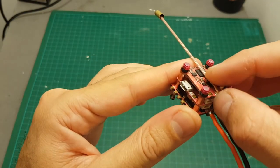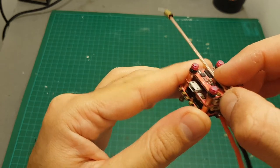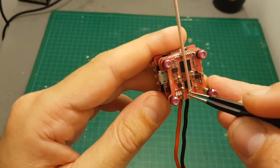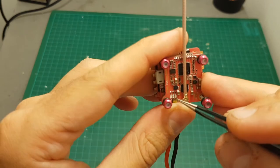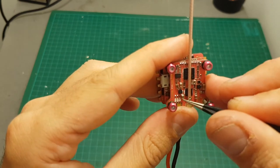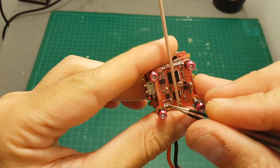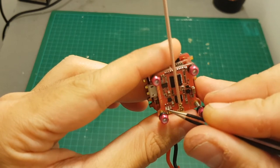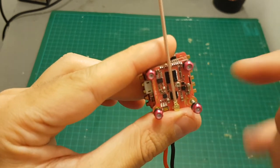In order to configure the band and channel you will have to use this button over here and these three indicators are going to let us know what is the band, channel and output power that we're using. The right one indicates the channel, then the middle one indicates the band and the left one indicates the output power.